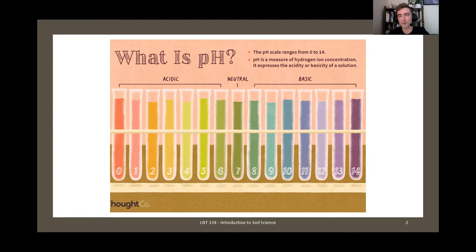The pH scale runs from 0 to 14, and neutral is 7. This is a logarithmic scale, which means each number is 10 times the value of the number before it. So if 7 is neutral, then 6 is 10 times more acidic, and 8 is 10 times more basic. A pH of 9 would be 100 times, and 10 would be 1,000 times. As you move further from 7, the concentration of hydrogen ions becomes much greater.